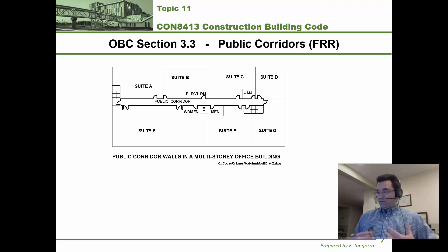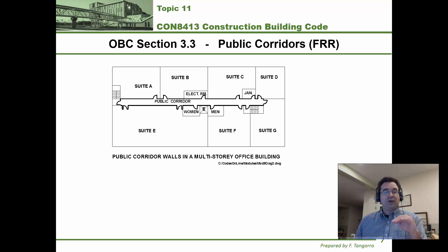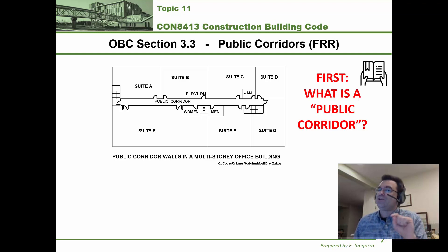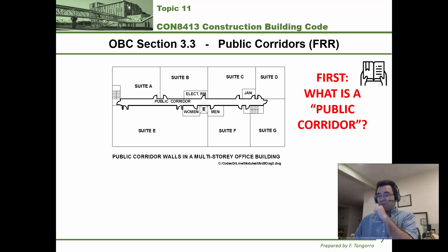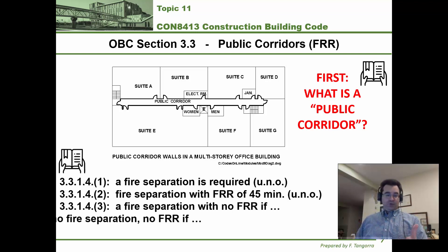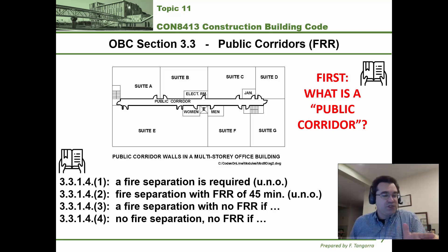Once you're out of suite C and heading to an exit, you go through a public corridor. A public corridor is loosely defined by the building code as a corridor — a hallway — that serves multiple suites. The building code states under these sentences that a fire separation is required for the walls of your corridor, unless the exemptions in sentences 2, 3, and 4 are found. Go check out what the building code defines as a public corridor.